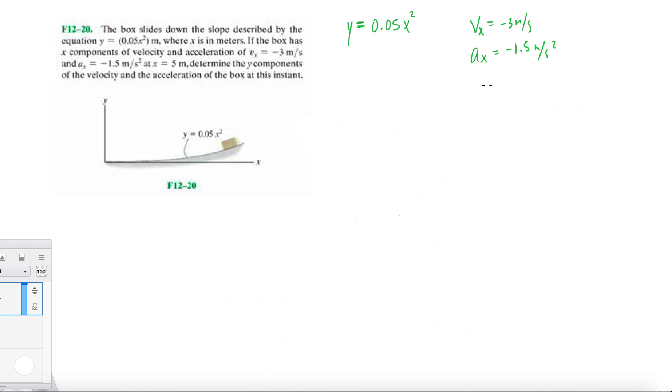At x equals 5 meters, determine the y components of the velocity and the acceleration of the box at this instant. I would encourage you to try to figure this out on your own, but you'll be running into a problem if you don't see it right away.